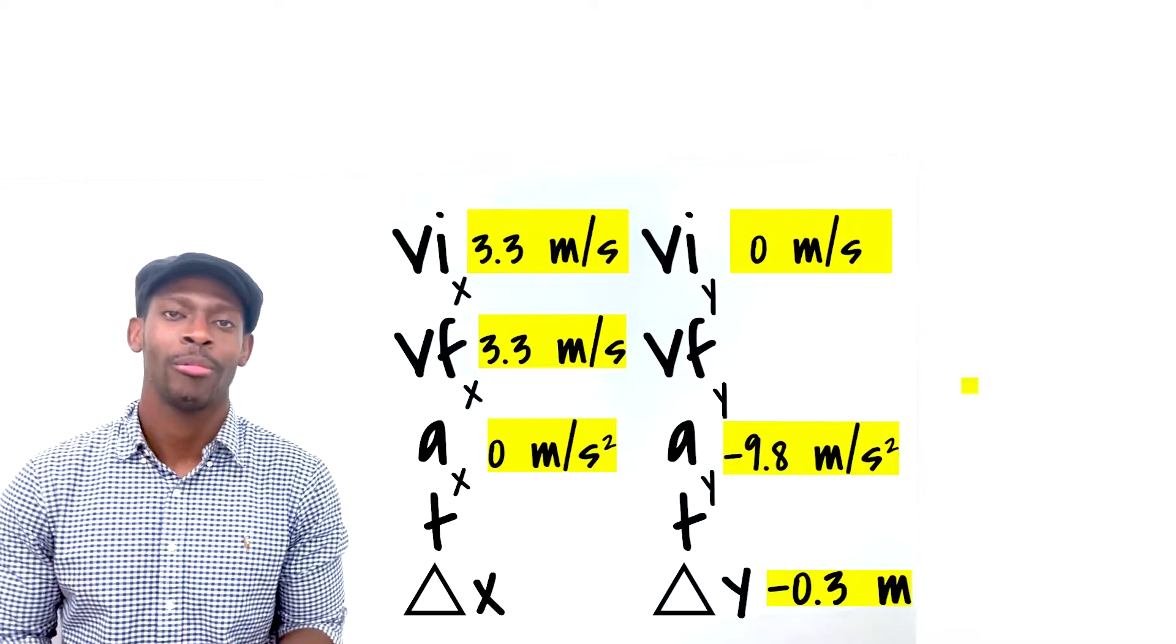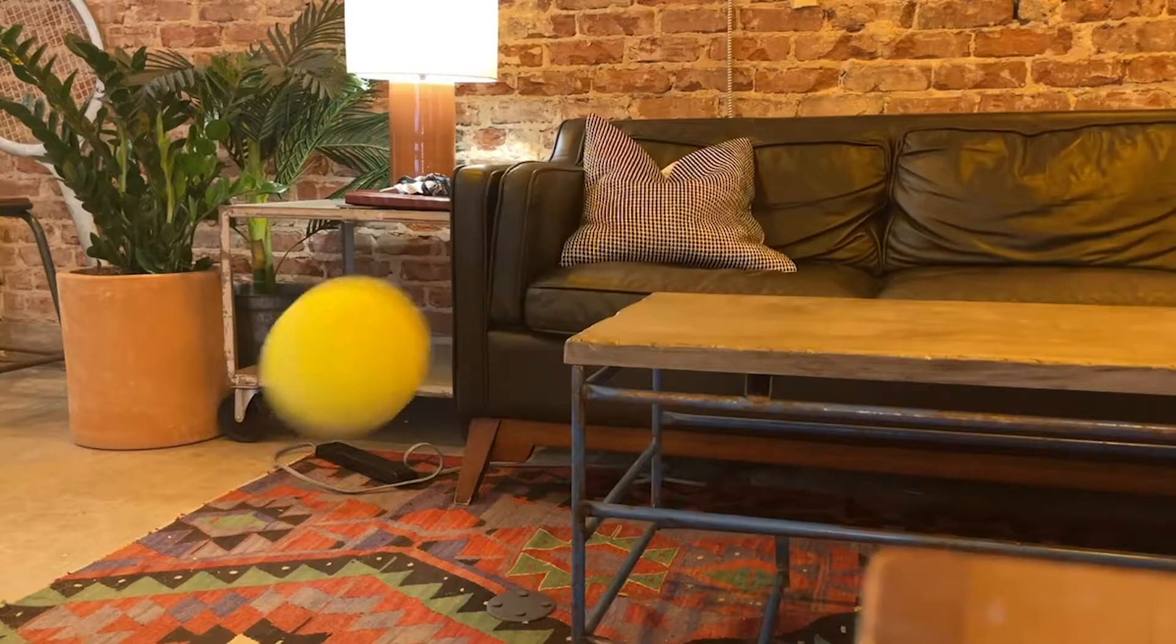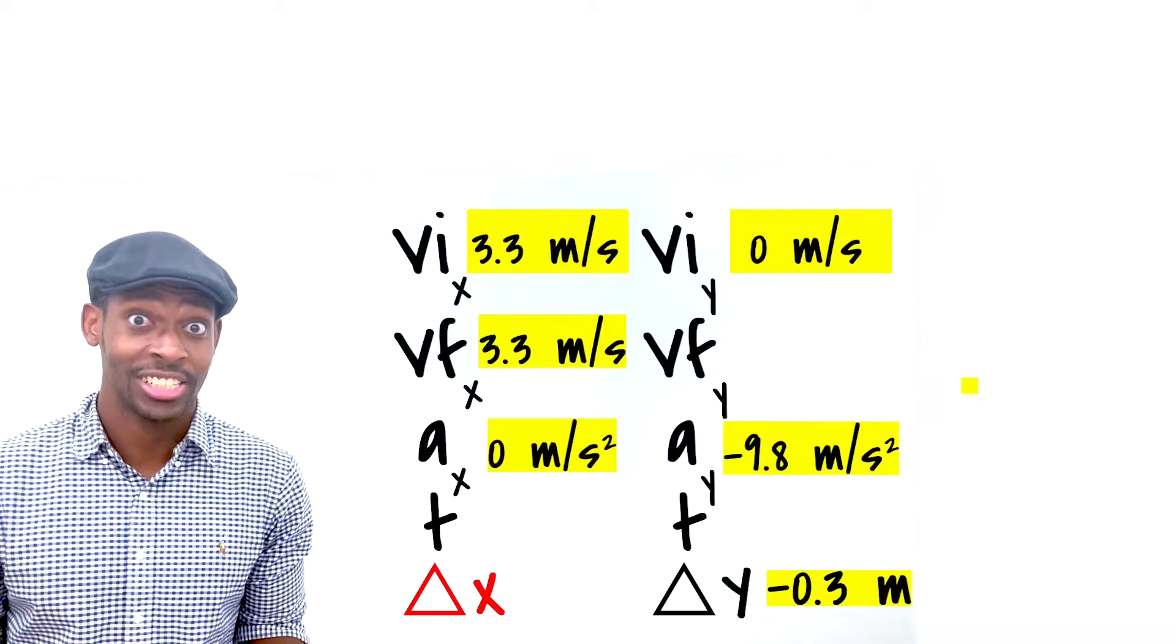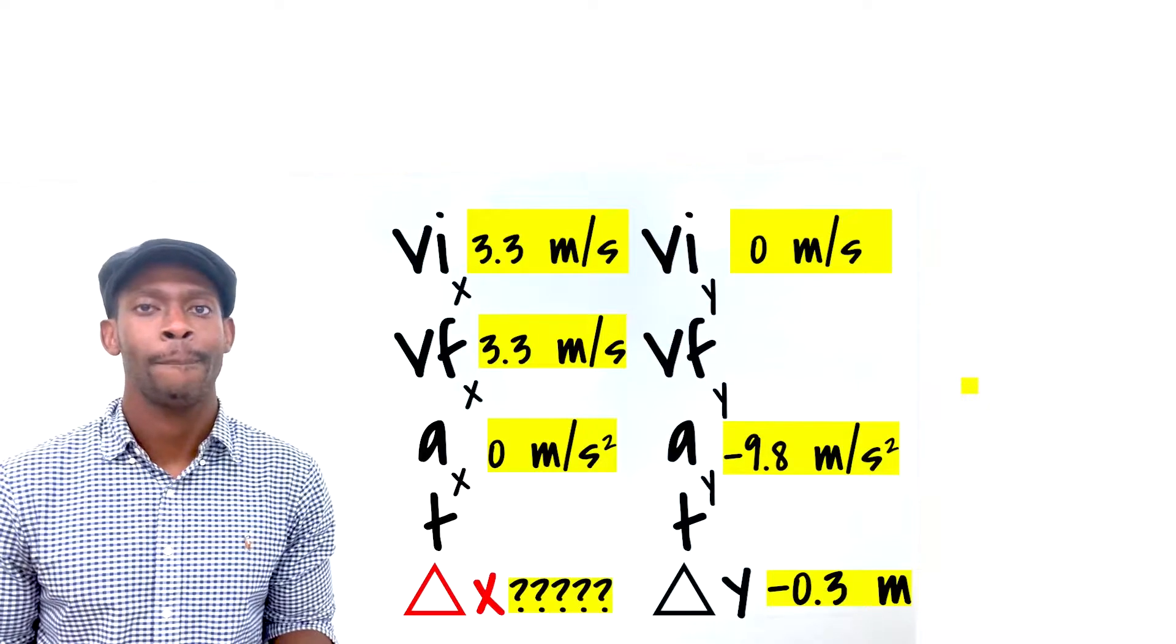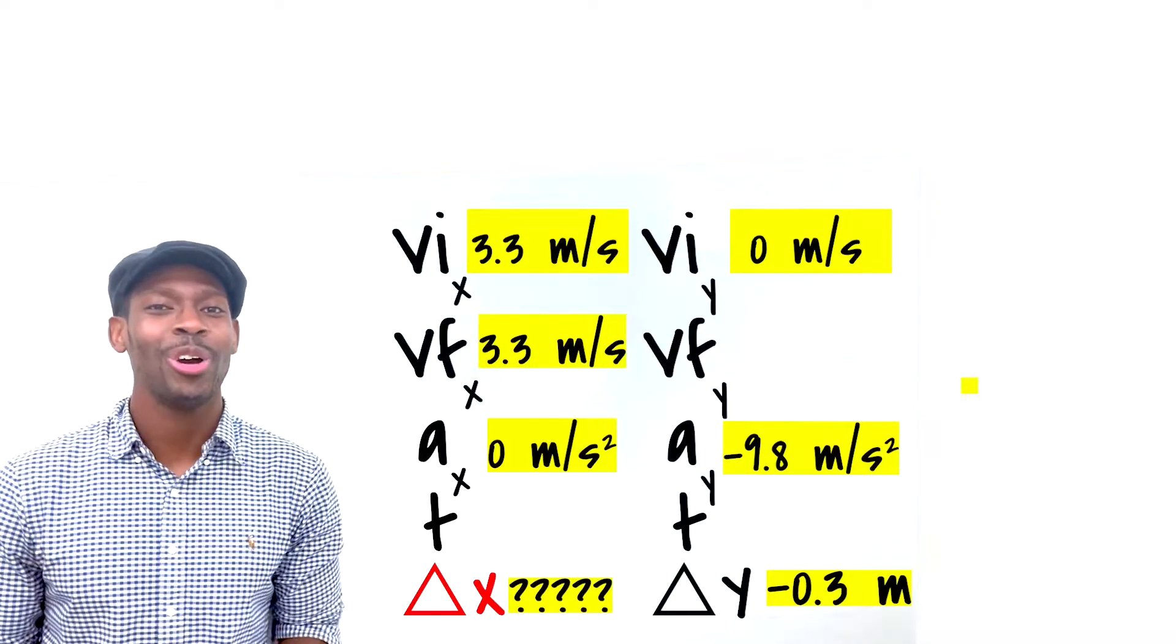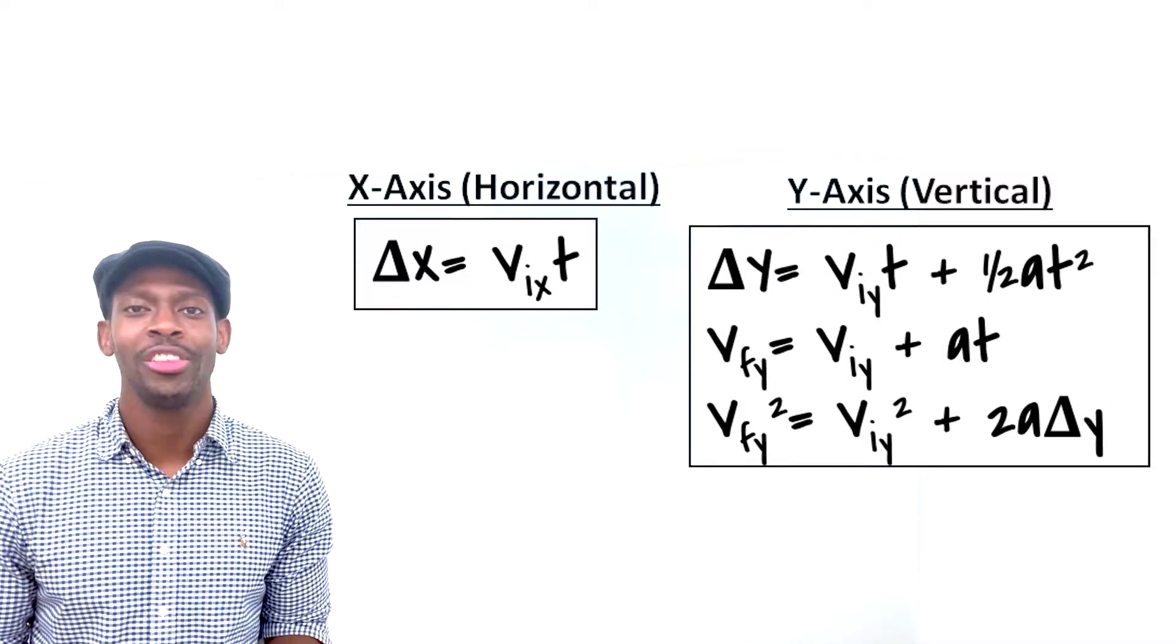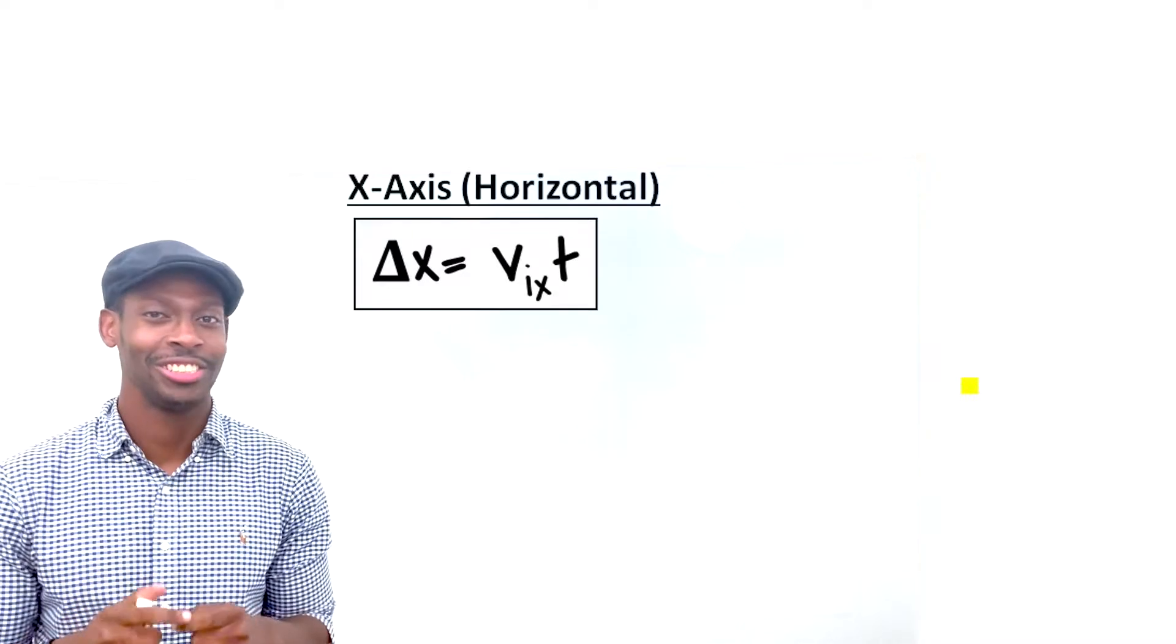Here we are. We're trying to figure out how far I need to place this bin for it to catch the ball. That means we're really looking for its changing position on the x-axis, delta x. I'm going to jump ahead very quickly. Since we're traveling in two dimensions, we also have two sets of kinematic equations to choose from. We only have one equation that deals with delta x. It's my favorite. It's easy.